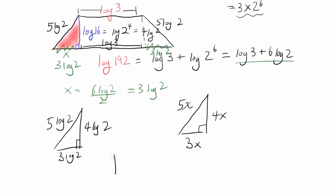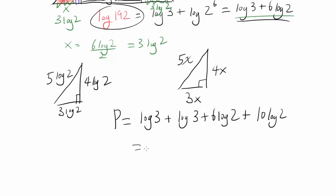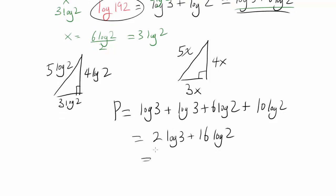To find the perimeter, add all the sides. You have log 3 + log 192, which equals log 3 + 6 log 2, plus the legs: 5 log 2 and another 5 log 2, that's 10 log 2. This equals 2 log 3 + 16 log 2.